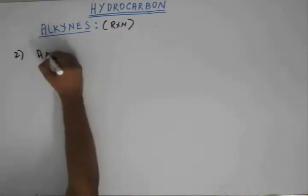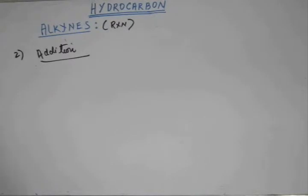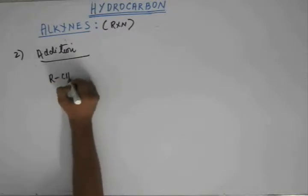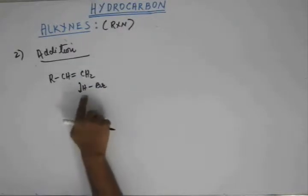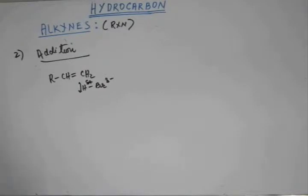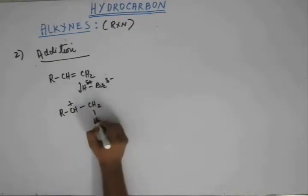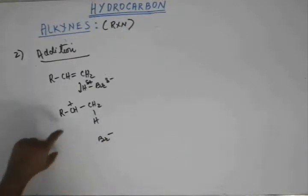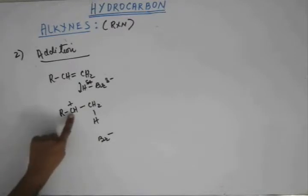Let's move to the second kind of reaction: addition reaction. Like we saw addition reaction in alkene, so would be addition reaction in case of alkyne. If we had alkene and added HBr, hydrogen comes here because it has a delta-positive charge, so it approaches the electron-rich alkene and forms a bond with one carbon. Br- comes out and then attacks the other carbon, forming a C-Br bond. This first step was the RDS and the intermediate was a carbocation.